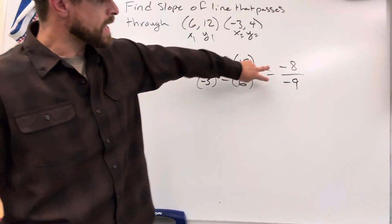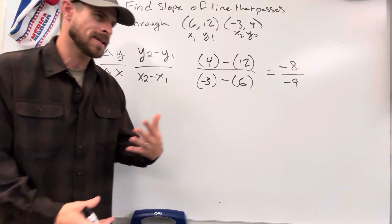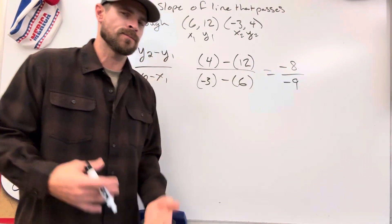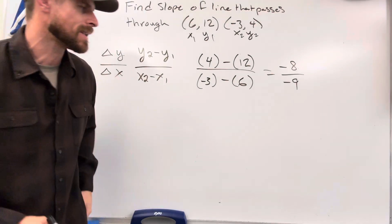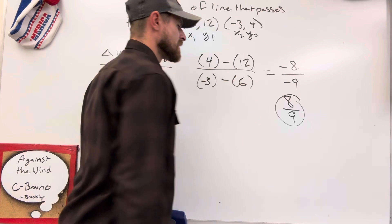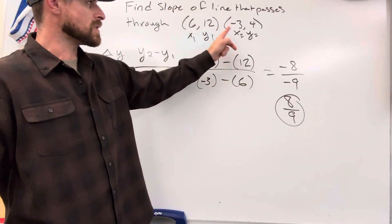Now, when you have two negatives in a fraction like you see here, we have to ask ourselves, what's a negative divided by another negative? You should know by now that a negative divided by a negative is a positive. So, you're just going to change that to positive 8 ninths, and that is the slope of a line that passes through these two given points.